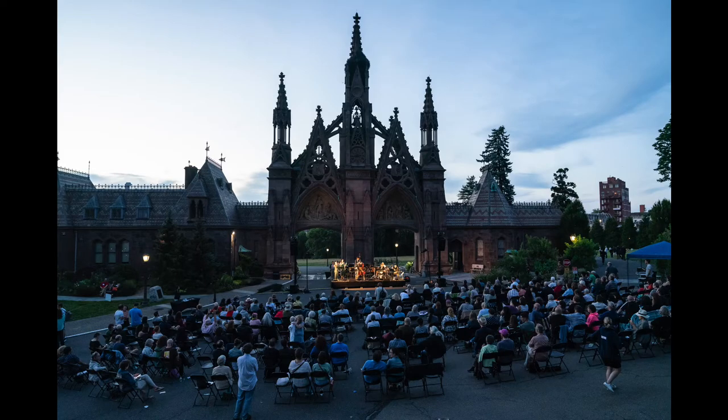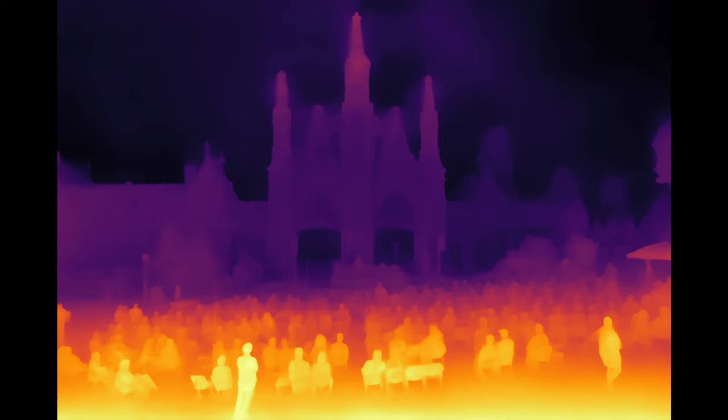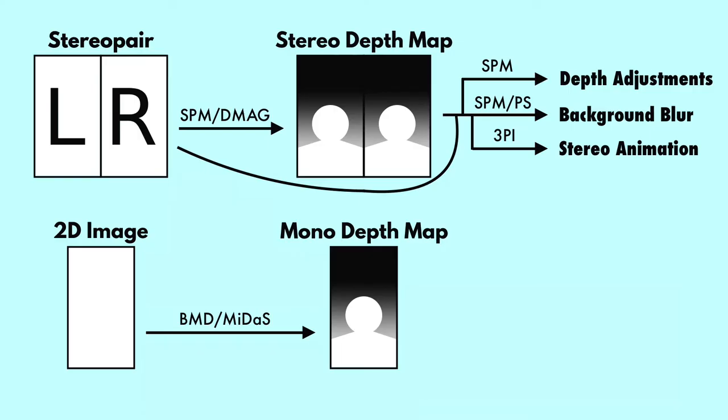Here is an example. This is a 2D photo originally by Steven Pisano. When we use Boosting Monocular Depth and MIDAS to estimate a depth map for it, we get this. You might notice some small imperfections, like the spires of the building leaning too far forward, but the amount of detail and the general accuracy is pretty astounding.